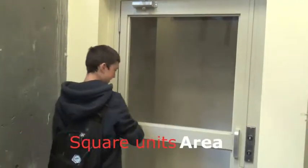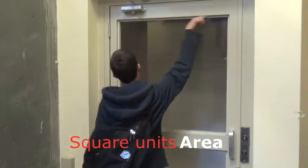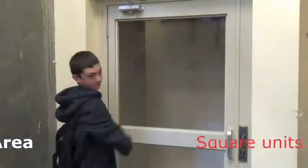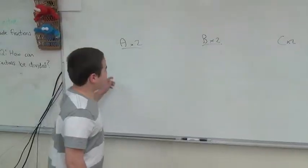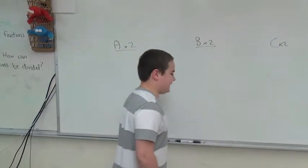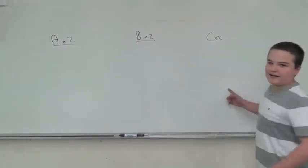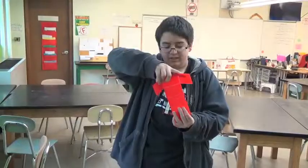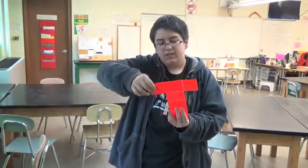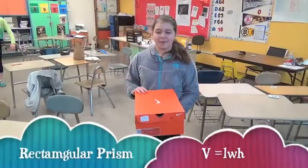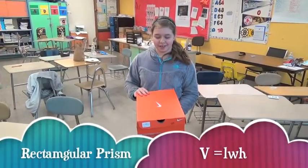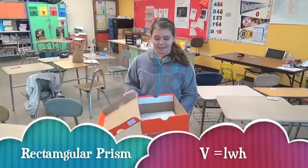Area is the number of square units inside a figure. Surface area is the area of all the faces added up. Volume is the number of cubic units inside a figure.